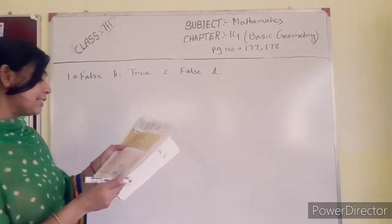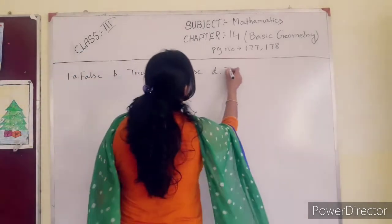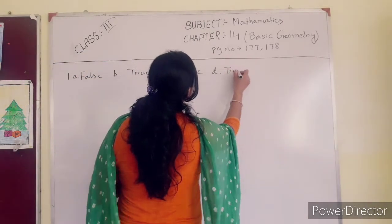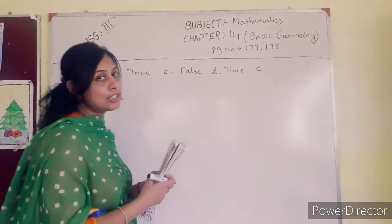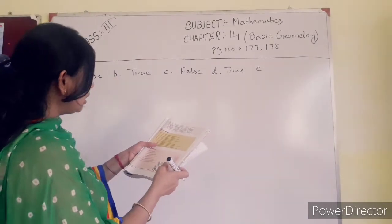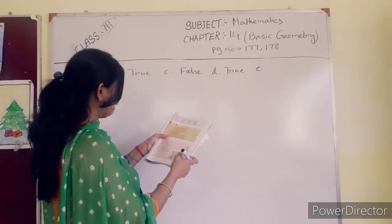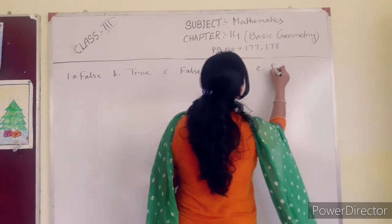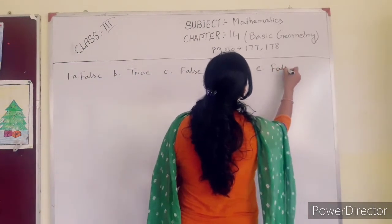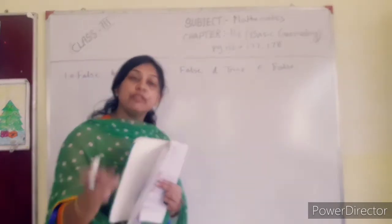Number D: 'A cylinder has no corner.' This one is true — I already have it in the chart, so everyone please learn the chart very well. Number E: 'Every face of a cube is a rectangle.' No, this one is false. Every face of a cube is a square, and every face of a cuboid is a rectangle.